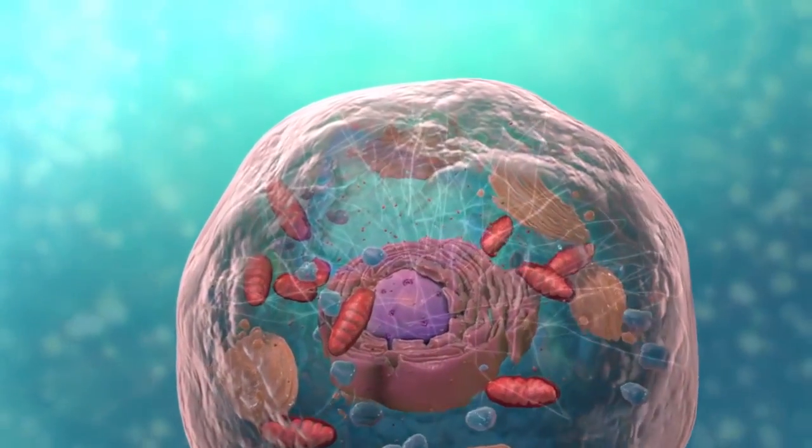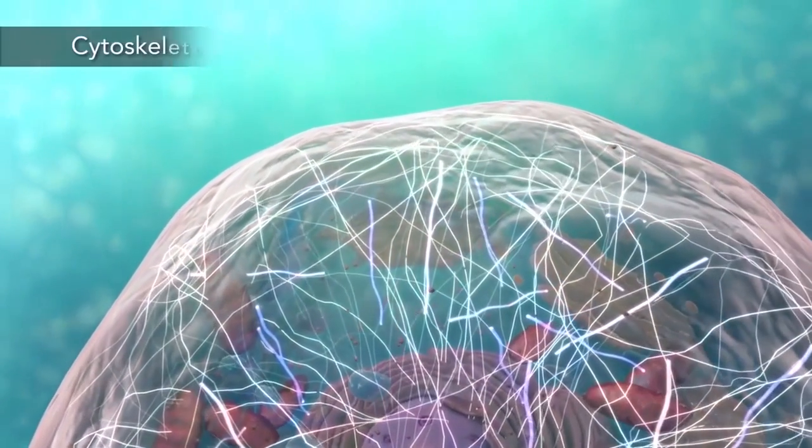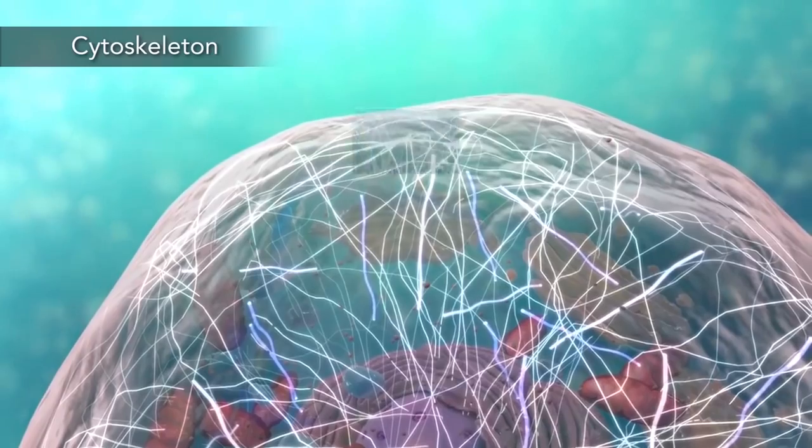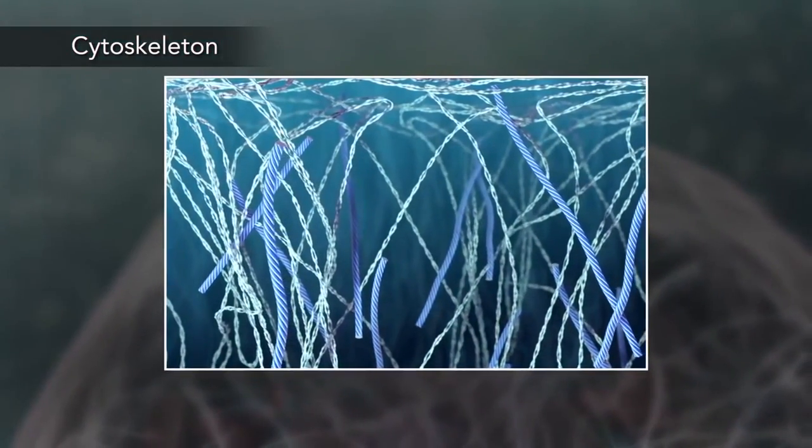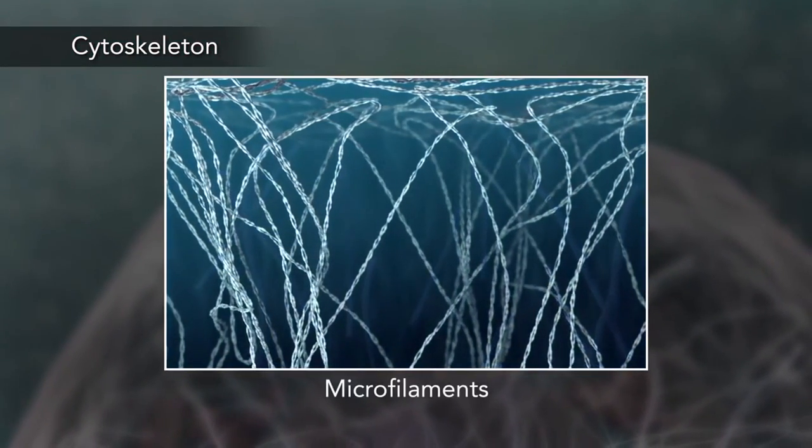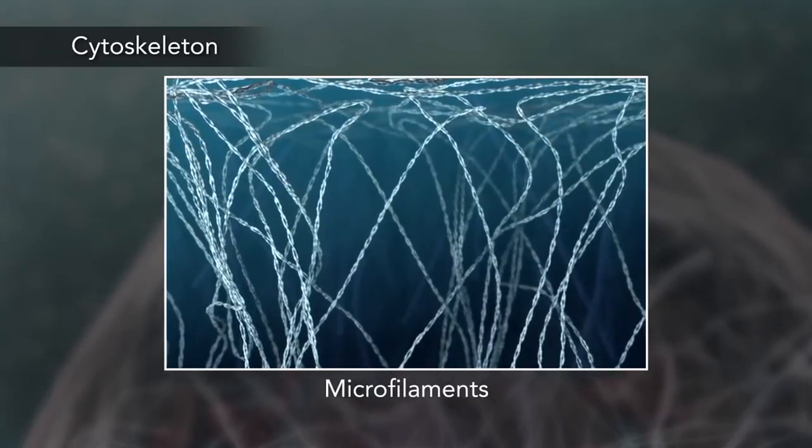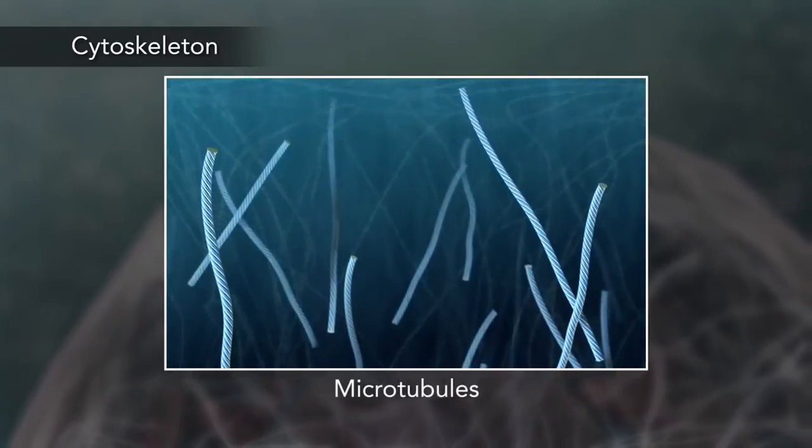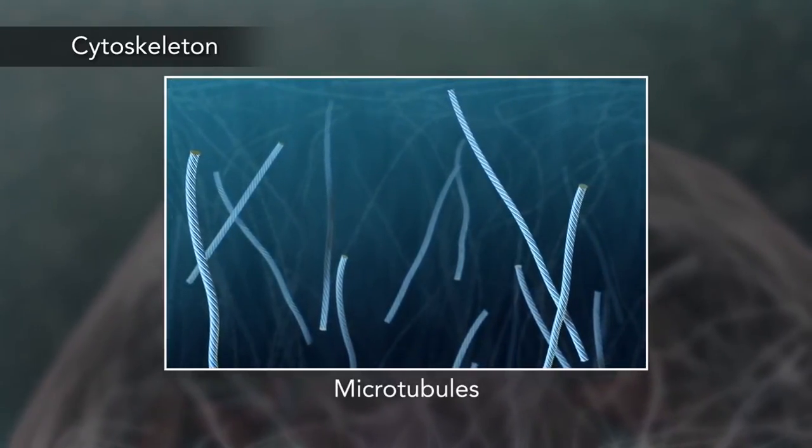Meanwhile, the cell maintains its shape through a cytoskeleton. The cytoskeleton includes the thread-like microfilaments, which are made of protein, and microtubules, which are thin, hollow tubes.